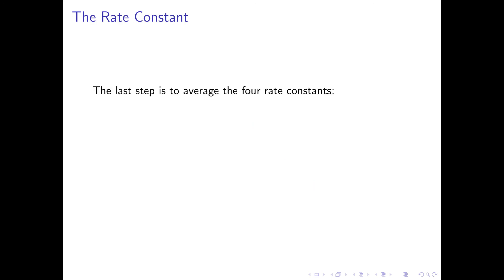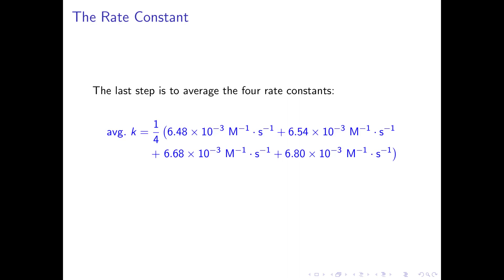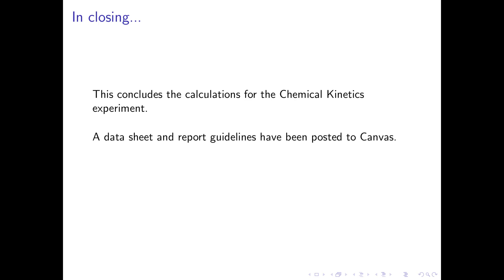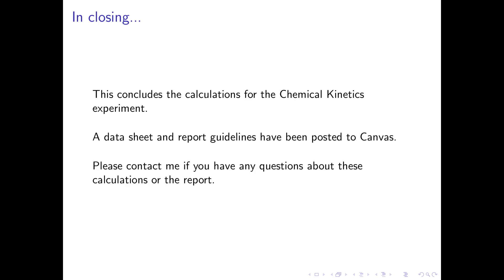Our last step is to average the four rate constants: k_avg = (1/4)(6.48 + 6.58 + 6.80 + 6.80) × 10^-3 per molar per second, which gives an average rate constant of 6.62×10^-3 per molar per second. This concludes the calculations for the chemical kinetics experiment. A data sheet and report guidelines have been posted to Canvas — please contact me if you have any questions.